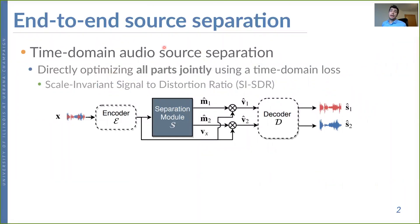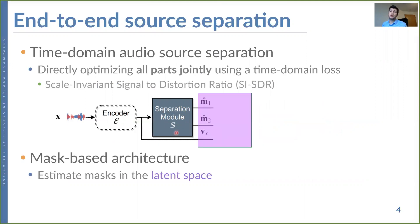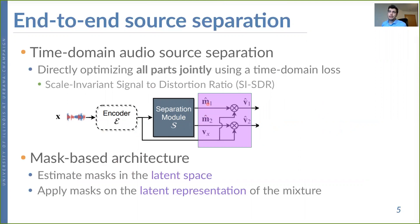In a conventional end-to-end source separation scheme — often called time domain audio source separation — we try to directly optimize all parts of the network jointly using a time domain loss from the estimated sources. We optimize the encoder, the separation module, and the decoder simultaneously using scale-invariant signal-to-distortion ratio as a loss function. This is often called a mask-based architecture because the separation module estimates some masks in the latent space and applies them on the latent representation of the mixture.